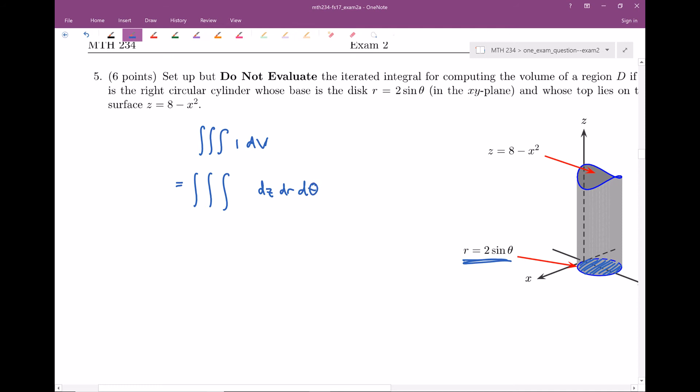And you should be yelling at me right now. I'm missing something here. Whenever you switch into cylindrical, like polar coordinates, we need to have an r. So instead of 1, this is gonna be 1 times r, aka r.